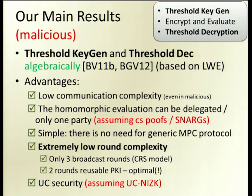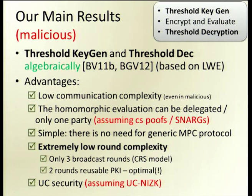If we want to delegate to a cloud, we additionally need the cloud to prove it has computed the correct function, so we need to assume CS proofs — succinct non-interactive arguments. But we don't have to assume that if each party evaluates the function by itself.